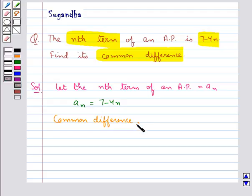that we usually denote by d is equal to a_n, that is the nth term, minus a_(n-1), that is the (n-1)th term.